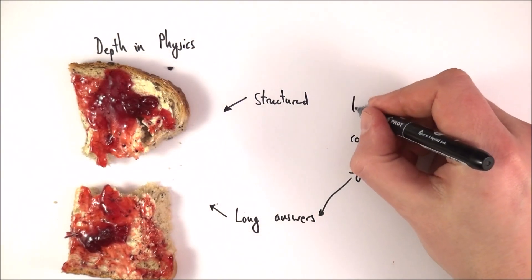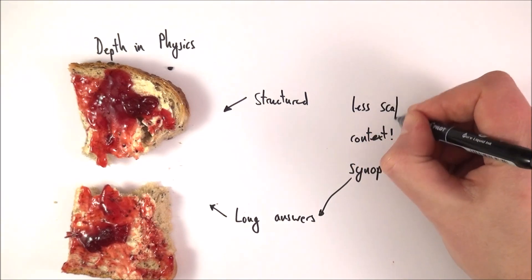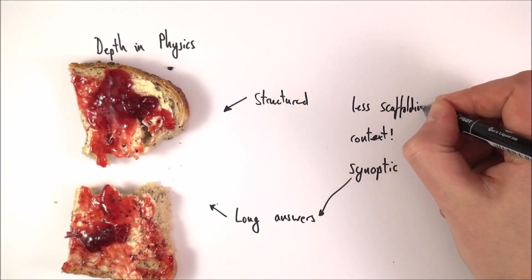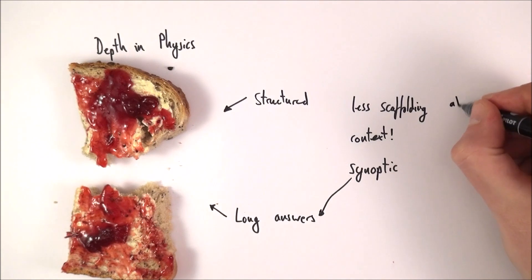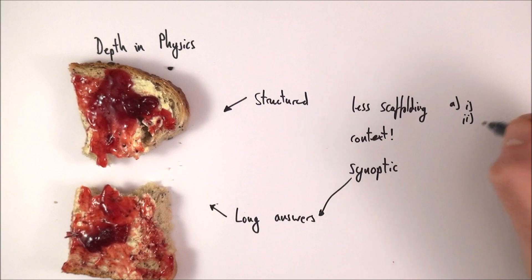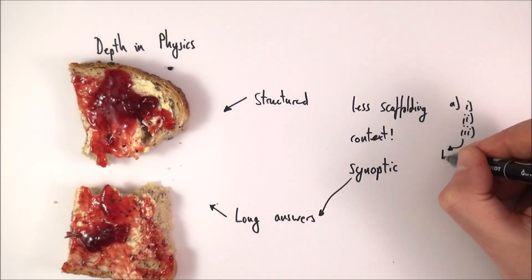The other thing is that there's going to be less scaffolding. Scaffolding is basically when you have a question that says, for part A work out maybe something, then use this answer to work out your answer to part two, which then gives your answer to part three, and then use this answer to work out your answer to maybe part B.